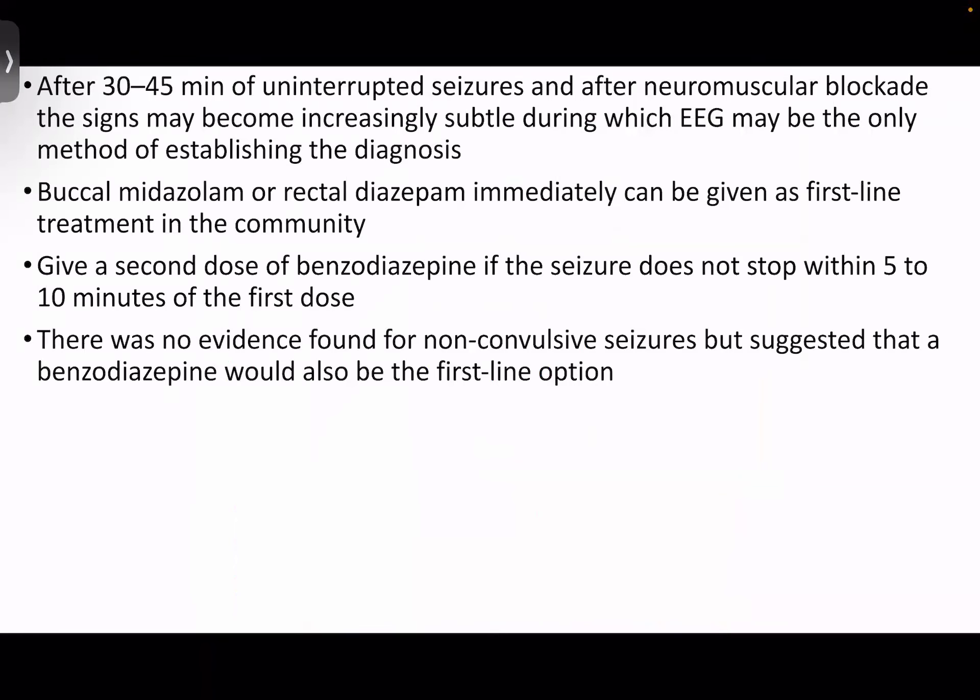After 30 to 40 minutes of uninterrupted seizures and neuromuscular blockade, signs may become increasingly subtle, during which EEG may be the only method of establishing the diagnosis. Initially the patient may have tonic-clonic movements, but over time the patient may not manifest much motor activity. Most patients with generalized convulsive status epilepticus will require intubation and neuromuscular blockade, and only EEG monitoring can help establish the diagnosis at that time.